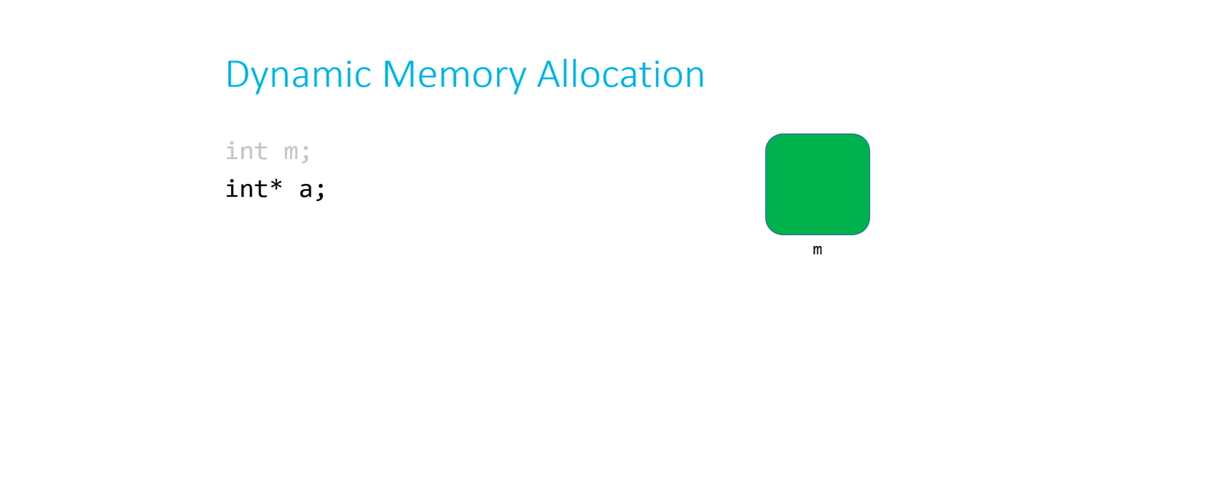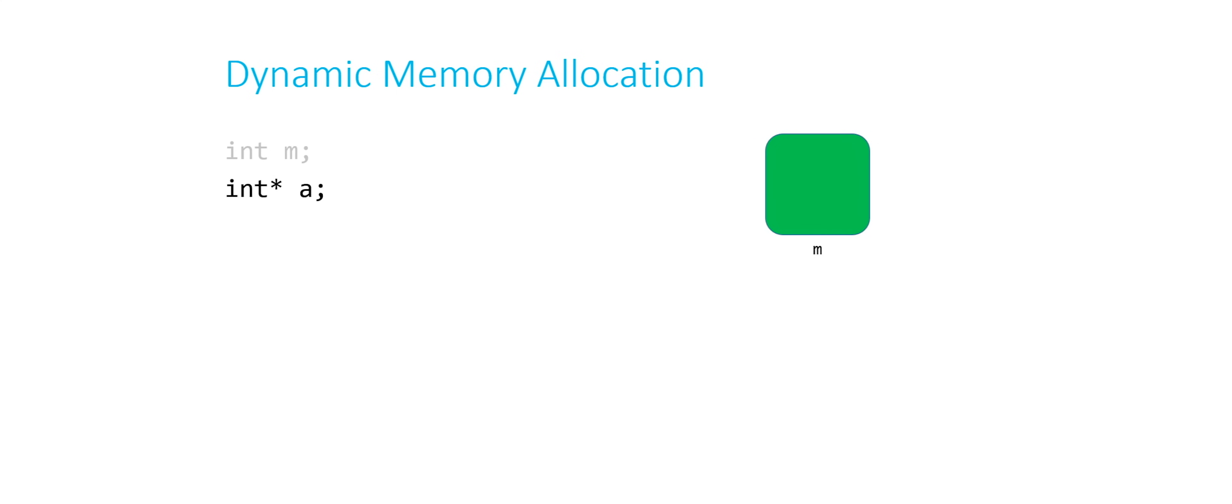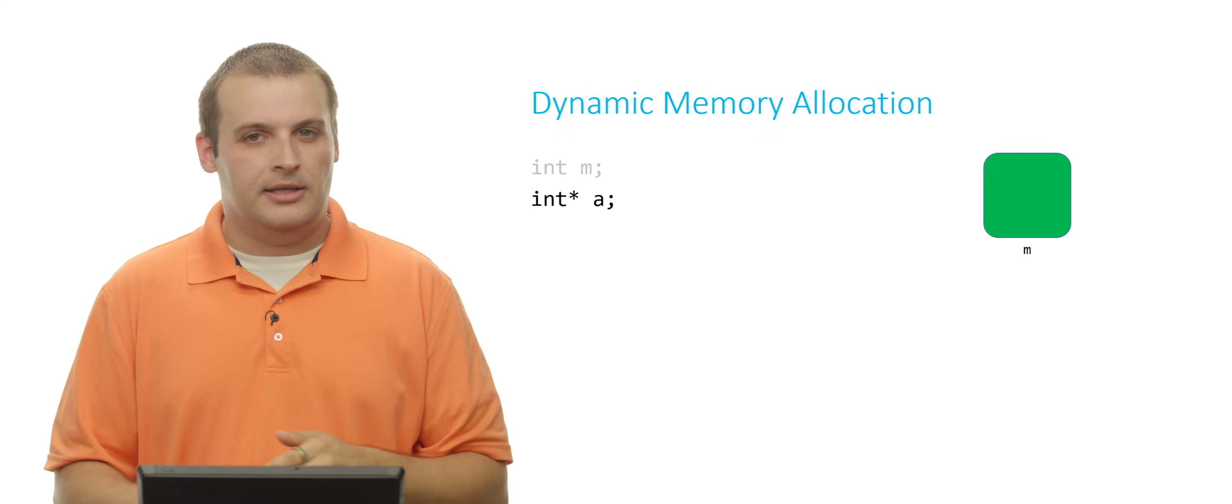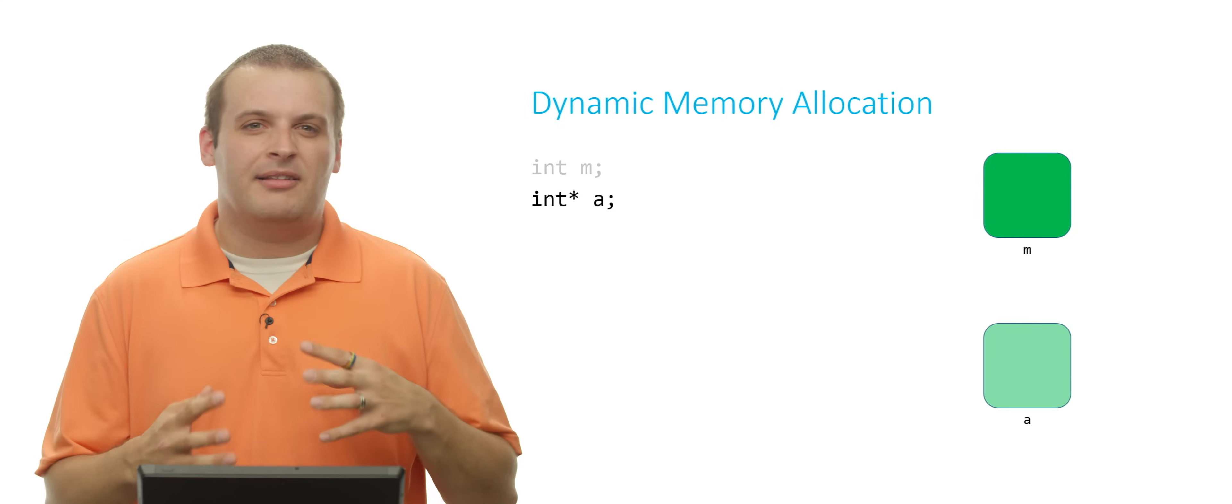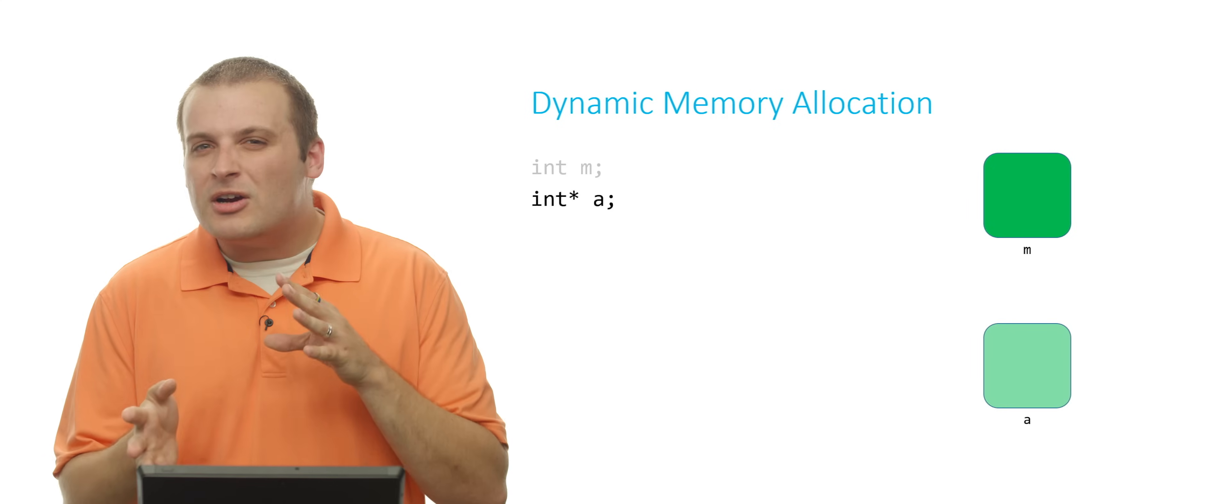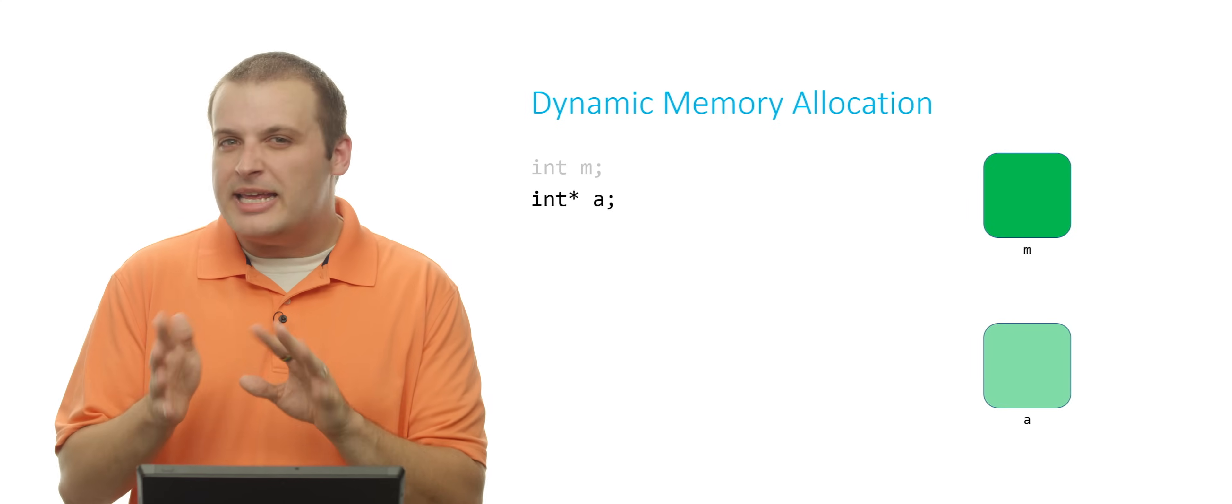Then I'm going to say int star a. So here I'm statically declaring a pointer called a. So recall that I like to think it's an int star, so it's int like. So it'll be green. It's a greenish box.